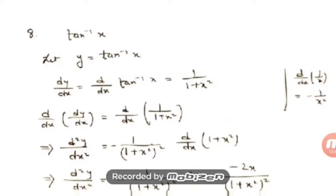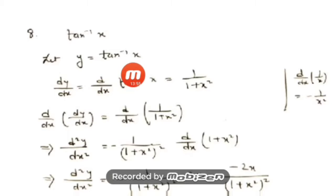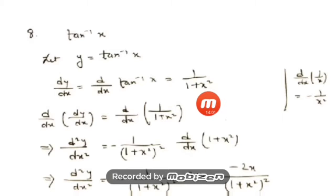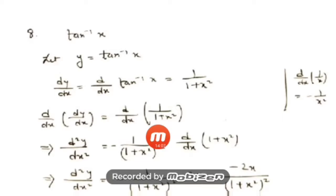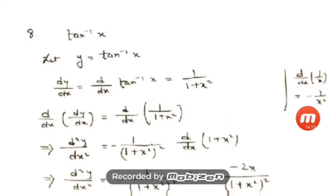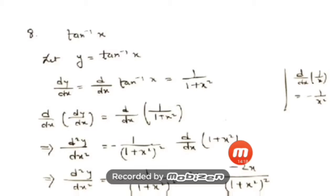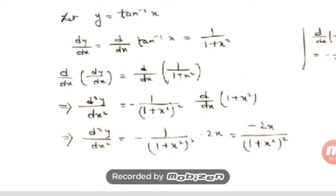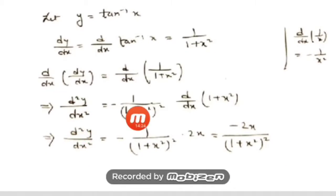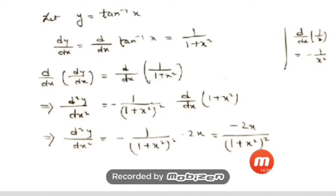Question number 8: y = tan⁻¹(x). So dy/dx = d/dx of tan⁻¹(x) = 1/(1 + x²). Then d/dx of (dy/dx) = d/dx of [1/(1 + x²)]. Using the formula d/dx(1/x) = −1/x², with x replaced by (1 + x²): d²y/dx² = −1/(1 + x²)² · d/dx(1 + x²) = −2x/(1 + x²)².